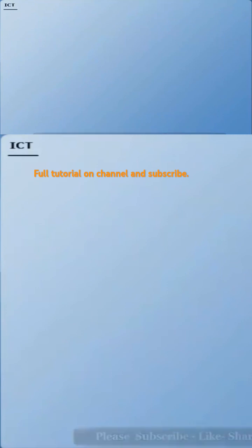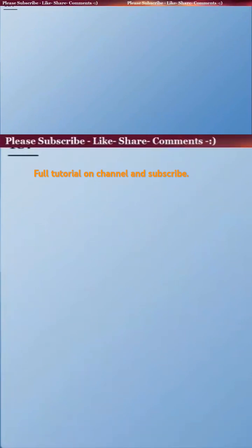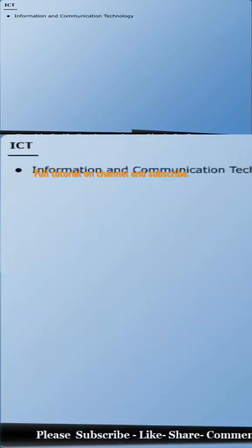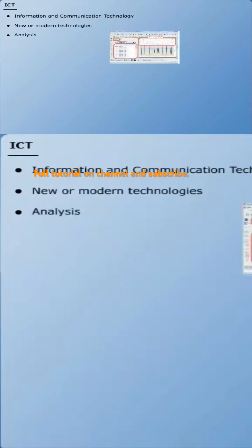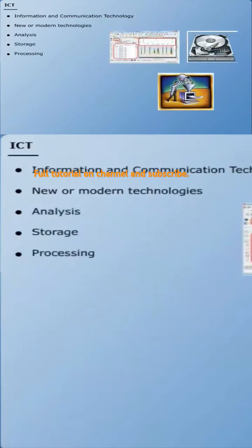Now we will explain the term ICT. ICT is an abbreviation of the term Information and Communication Technology. It generally refers to the use of new or modern technologies to aid in analysis, storage, processing, as well as communication of information.